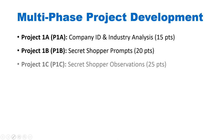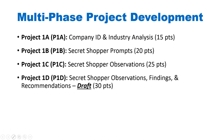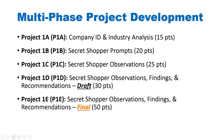Project 1c is where you will record and present your secret shopper observations, worth 25 points. The fourth piece is Project 1d, a draft of your observations, findings, and recommendations, worth 30 points. Ultimately this all comes together in your final submission — the observations, findings, and recommendations — which is worth 50 points. All of these will be peer-reviewed.